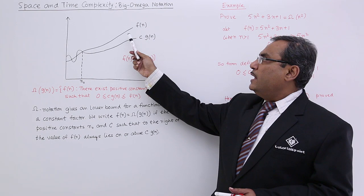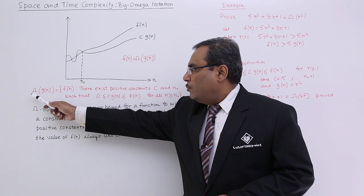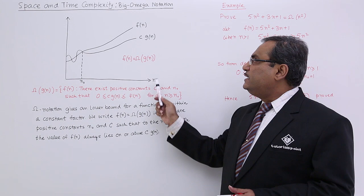That means f of n cannot go below this c into g of n. Big omega g of n is equal to f of n.